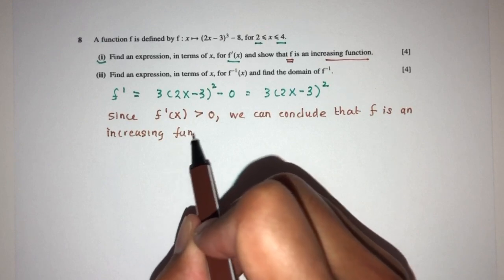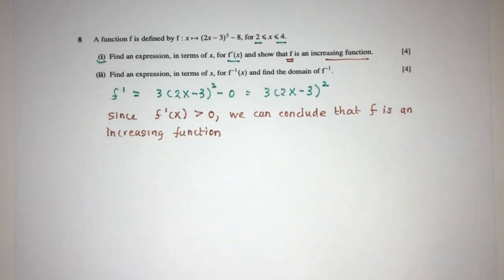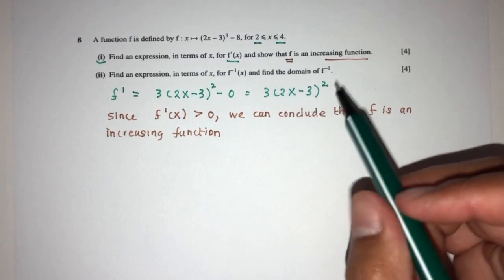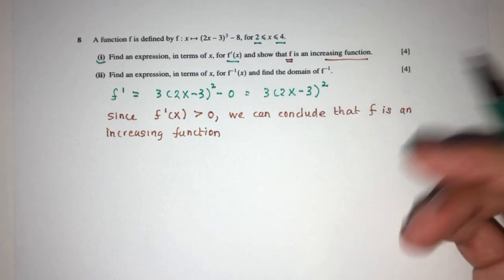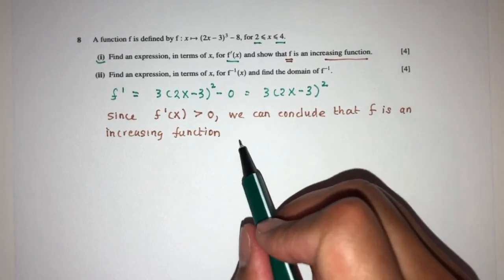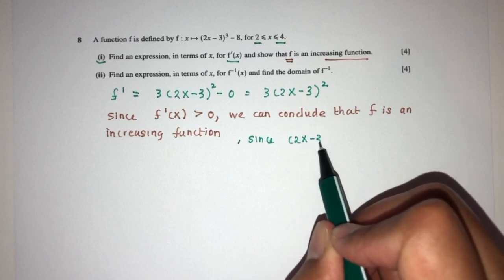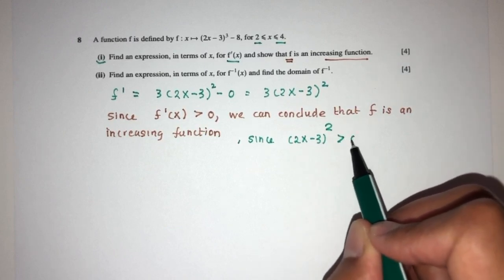Now, you may ask me, how do I know it is always going to be more than 0? But if you observe, very simple. For any values of x here, we have square. Now, when you square something, you're always going to be positive. Since we know that this square is always going to be more than 0.